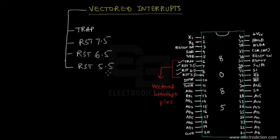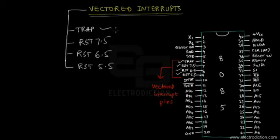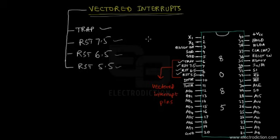The question is: what do I mean by the term vectored interrupts? For these vectored interrupt pins — Trap, RST 7.5, 6.5, or 5.5 — whenever an interrupt signal from any external device falls on any of these pins, the memory call location is automatically set to a predefined location. You don't need to provide any external hardware for it.